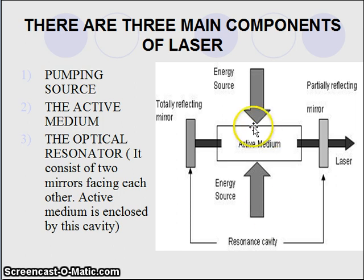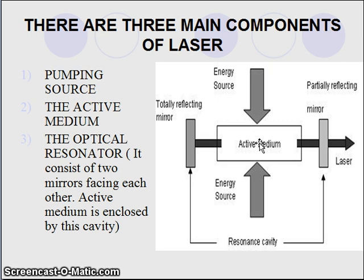The second component is the active medium. The active medium in case of solid state laser, that is ruby laser, is ruby crystal. Ruby crystal consists of aluminium oxide along with 0.05 percent chromium ions. In case of helium-neon laser, the active medium is helium and neon atoms, and in case of CO2 laser, H2, N2, and CO2 molecules are the active medium.